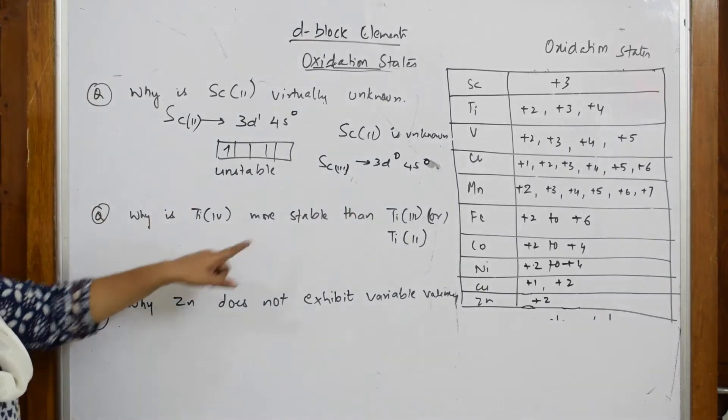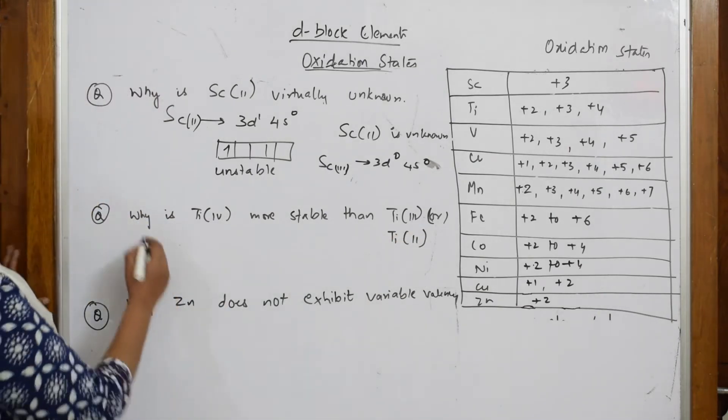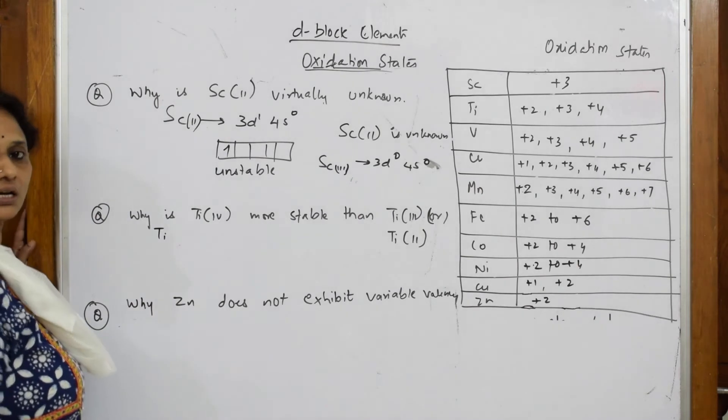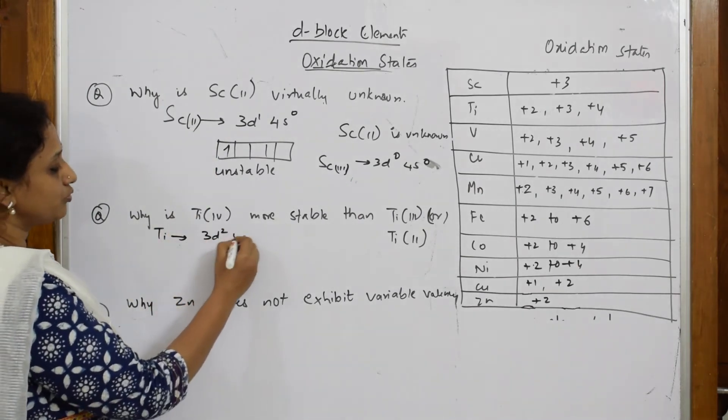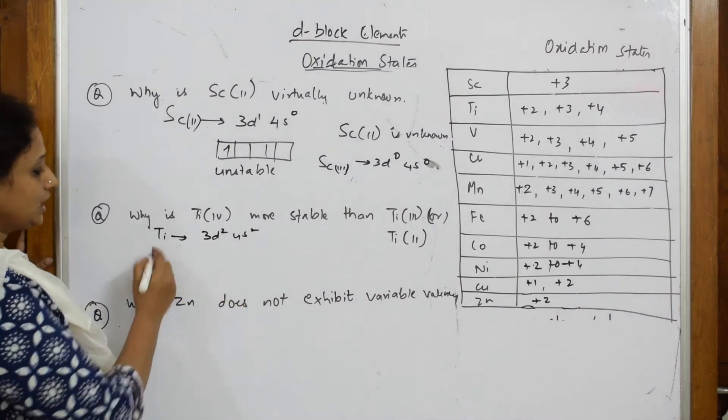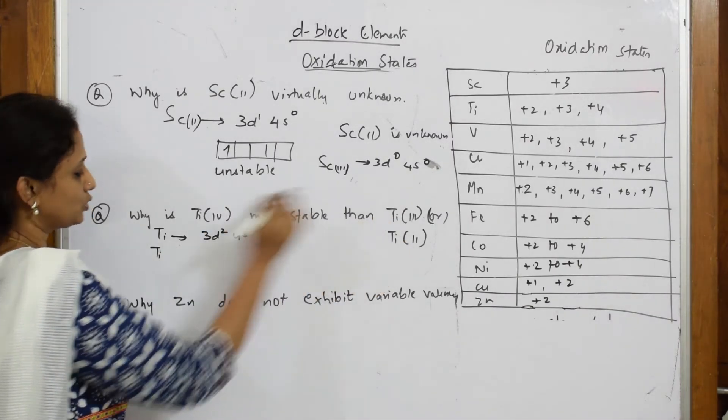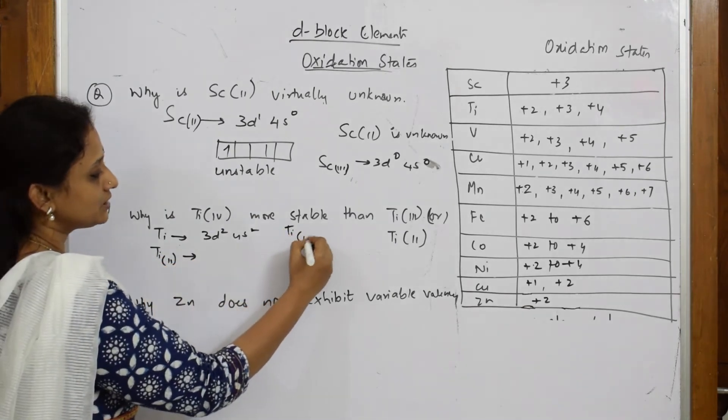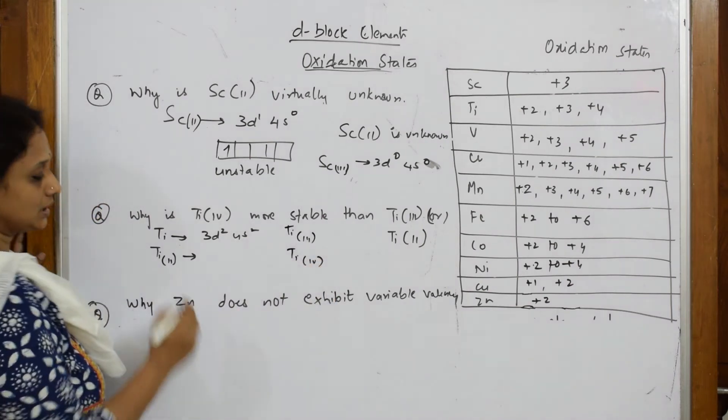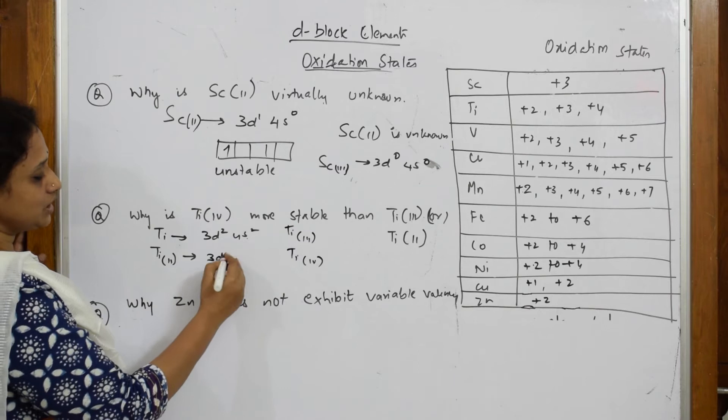Next important thing: why is Ti4+ more stable than Ti3+ or Ti2+? So titanium configuration after scandium is 3d2 4s2. Now let us write titanium +2, titanium +3, and titanium +4. If it is titanium +2, you're going to remove two electrons from here, this becomes 3d2 4s0.